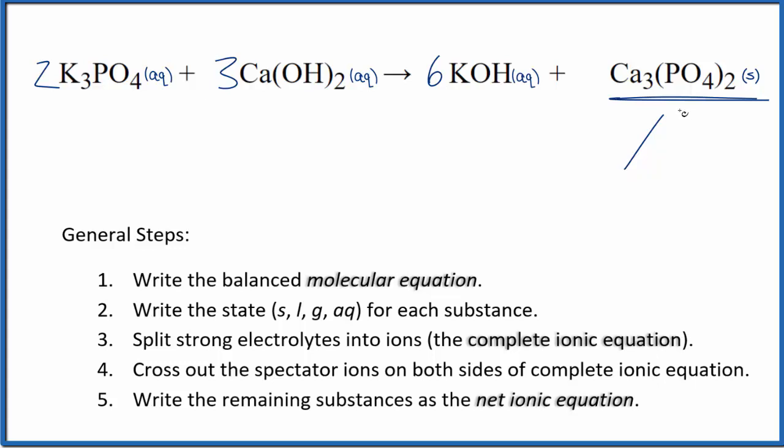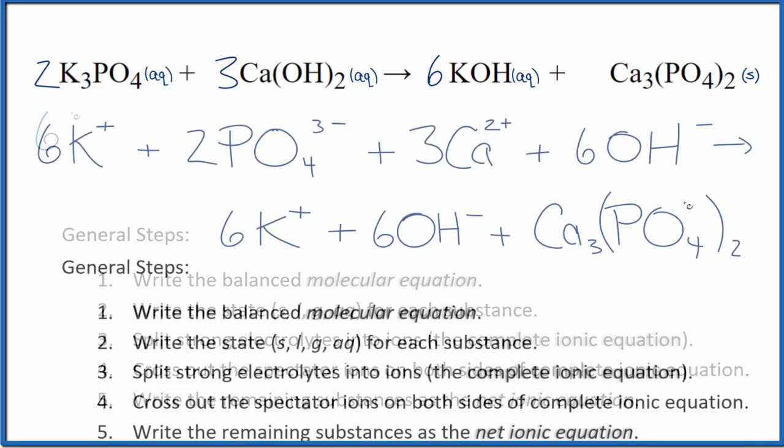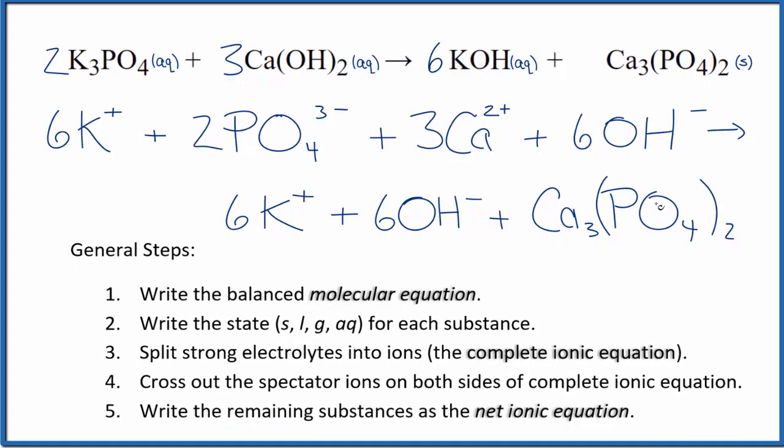So we have our states. Once we have the states, we can split the strong electrolytes into their ions for the complete ionic equation. We don't split solids apart when we do net ionic equations. So the complete ionic equation looks like this. This is the complete ionic equation.